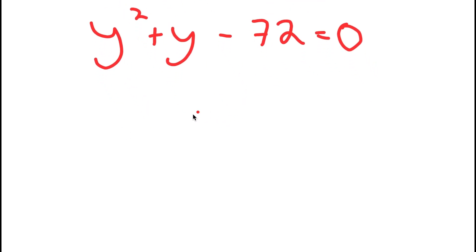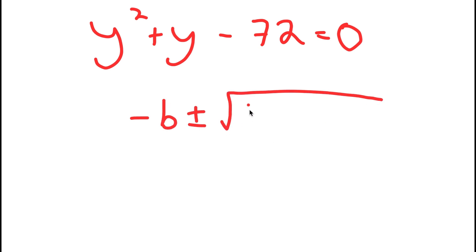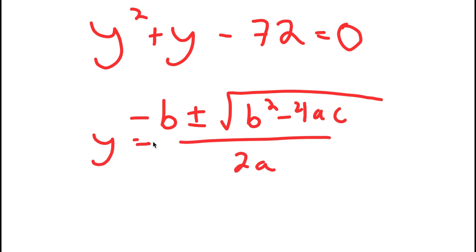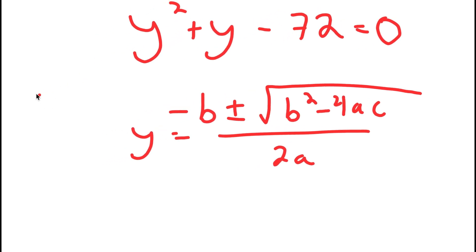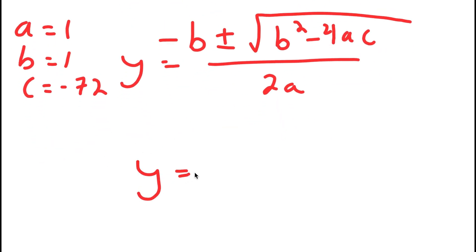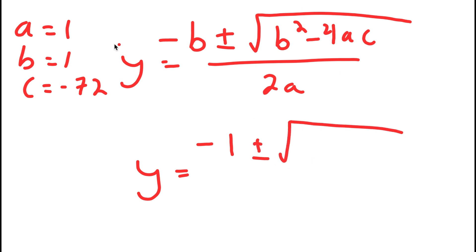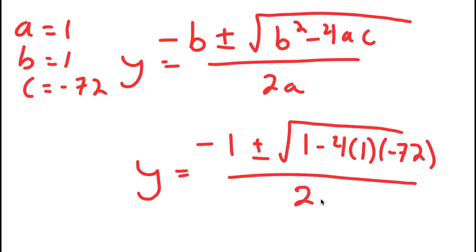The quadratic formula is negative b plus or minus the square root of b squared minus 4ac, all over 2a. In this case, a is 1, b is 1, and c is negative 72. So I get y is equal to negative 1 plus or minus the square root of 1 squared — which is 1 — minus 4 times a, which is 1, times c, which is negative 72, all over 2a, so 2 times 1.